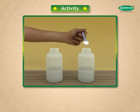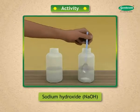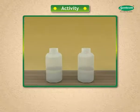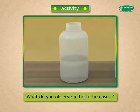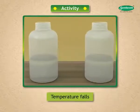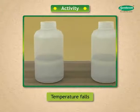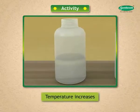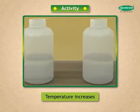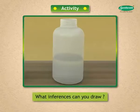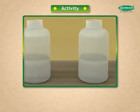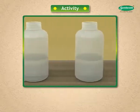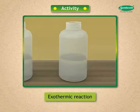Add 5 g of sodium hydroxide to the other bottle. Note the solution temperature. What do you observe in both cases? The temperature of the solution falls in the first case. The temperature of the solution increases in the second case. What inferences can you draw? The first is an endothermic reaction and the second is an exothermic reaction.